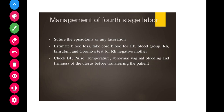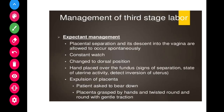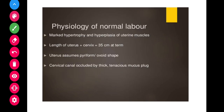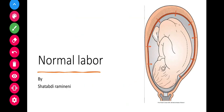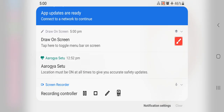Management of the fourth stage includes suturing the episiotomy or any first, second, or third degree lacerations. Estimate blood loss and take cord blood for hemoglobin, blood group, Rh factor, bilirubin, and Coombs test — especially if the mother is Rh negative. Check blood pressure, pulse, and temperature, monitor for abnormal vaginal bleeding and firmness of the uterus before transferring the patient. This concludes the discussion on normal labor and management of the four stages.